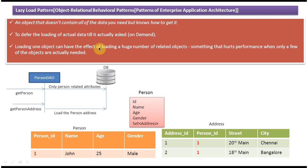The third point is that loading one object can have the effect of loading a huge number of related objects, which hurts performance when only a few are actually needed. For example, if a person's primary key is referenced as a foreign key in 50 tables, loading all 50 table objects for a simple get person request would be a performance issue. With lazy load, we only load data when it is actually required.